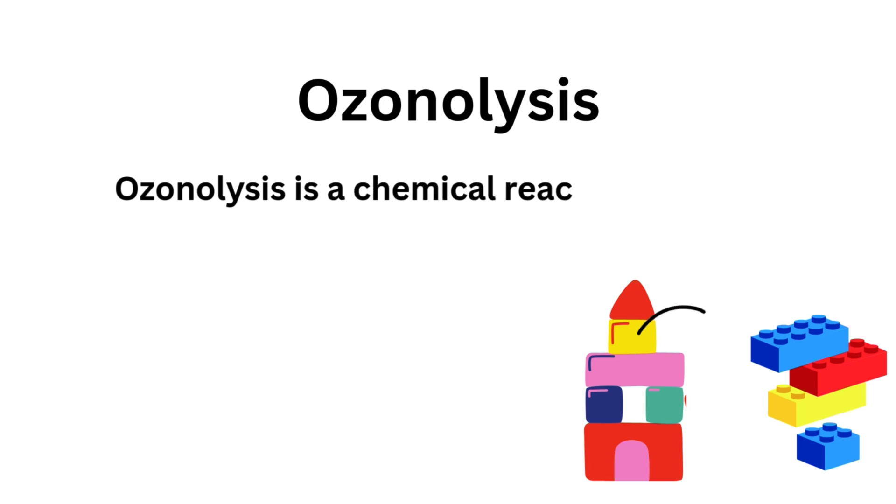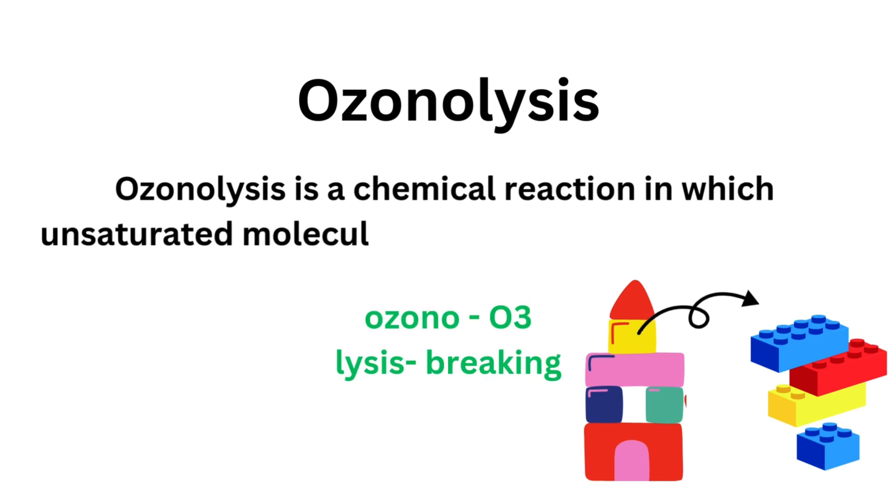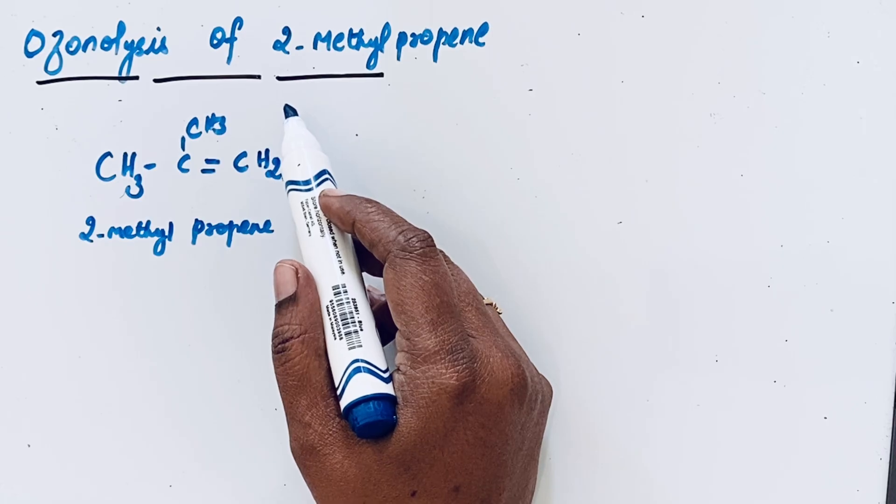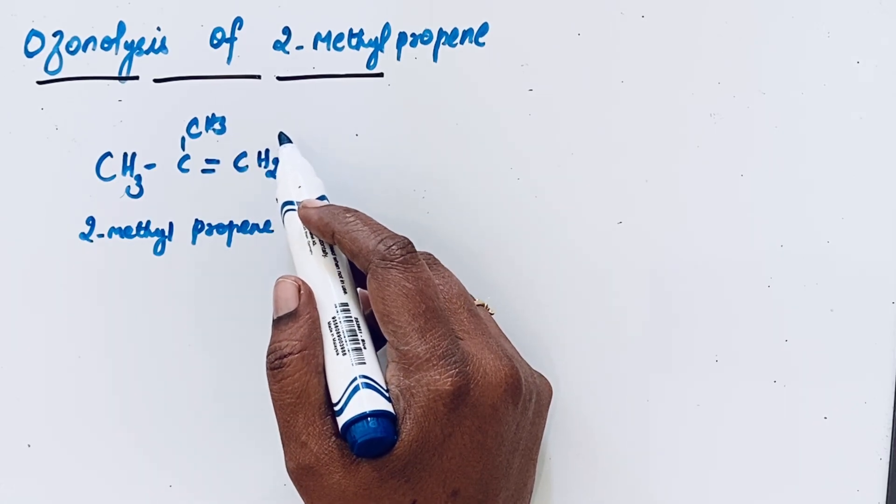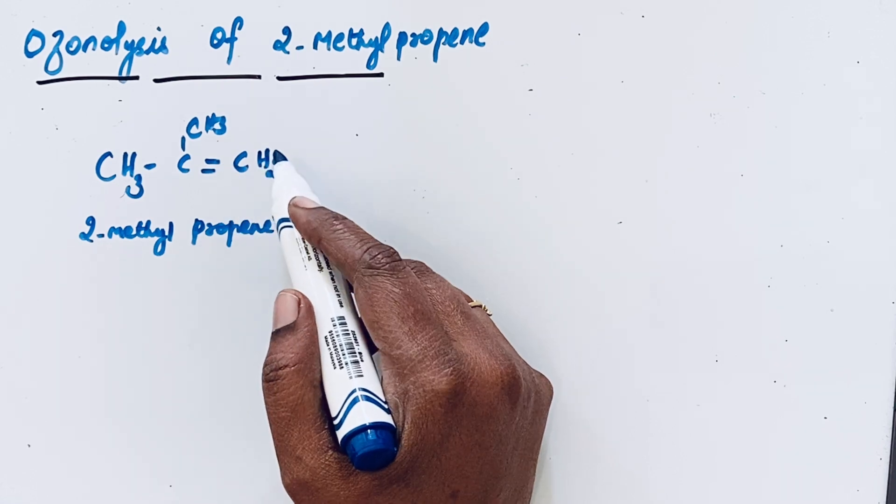Ozonolysis is the process of a chemical reaction in which any unsaturated compound can be cleaved by ozone molecule. Here 2-methylpropene is the unsaturated alkene which contains a double bond.